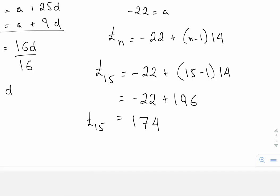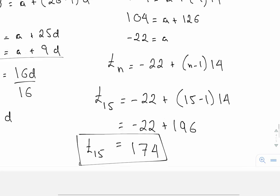And 196 minus 22 is 174. And that's the value of T subscript 15, or T sub 15. And there's our general term.